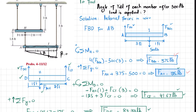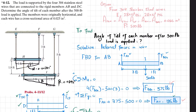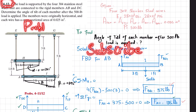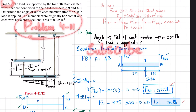To summarize: member AB tilts at beta = 0.0295° and member CD tilts at alpha = 0.00341°. These are very minute angles that are barely perceptible. This is how we calculate the angle of tilt. If you have any questions, ask in the comments. If this problem is unclear, watch problem 4-11 first and then return to this problem. Thank you.